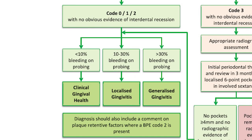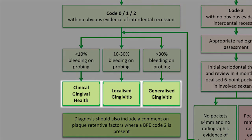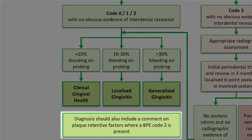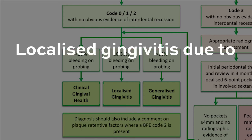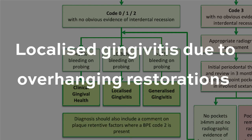If they also scored a code 2 anywhere, you would supplement the gingival diagnosis with any plaque retentive factors or calculus which might have led to that score of 2. So for example, localised gingivitis due to overhanging restorations on upper right 5 and upper right 6.